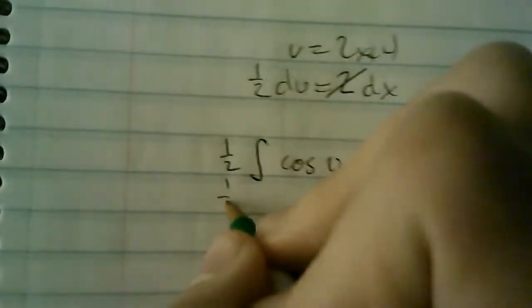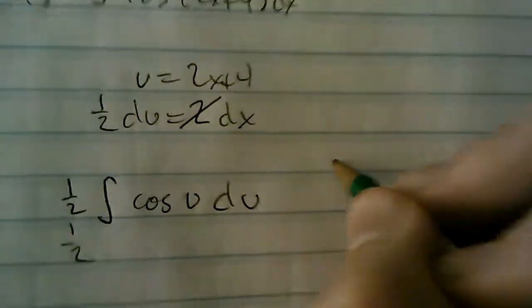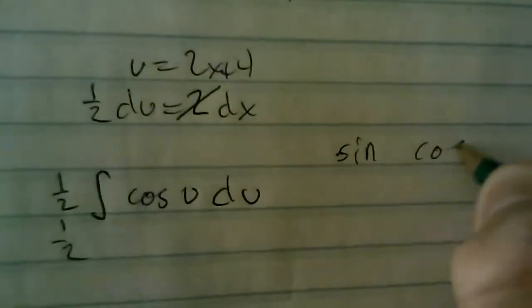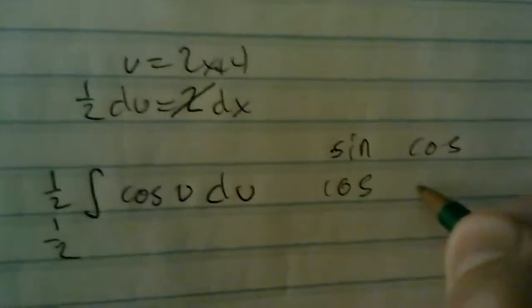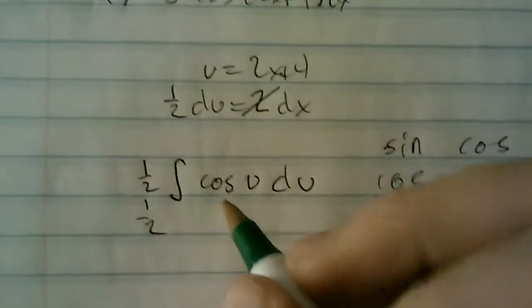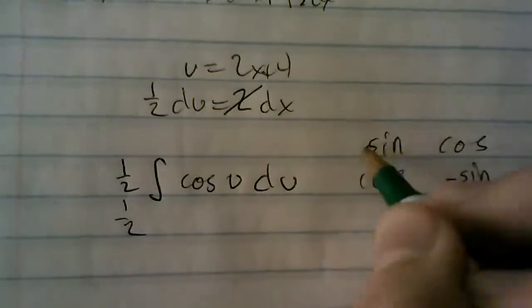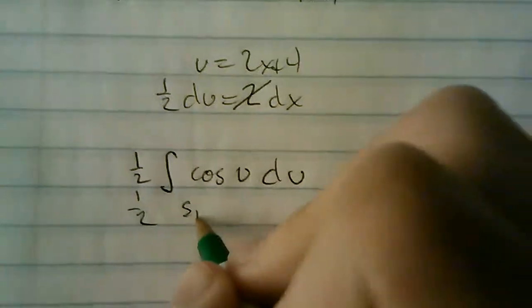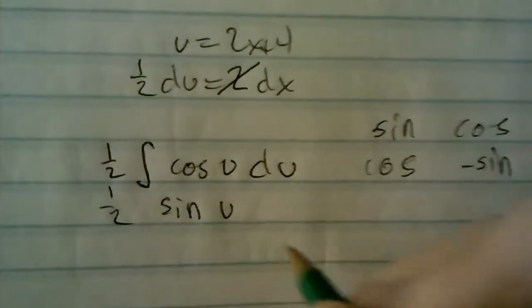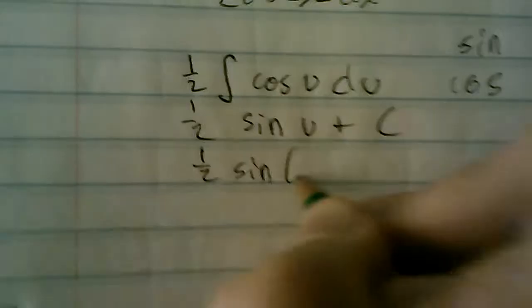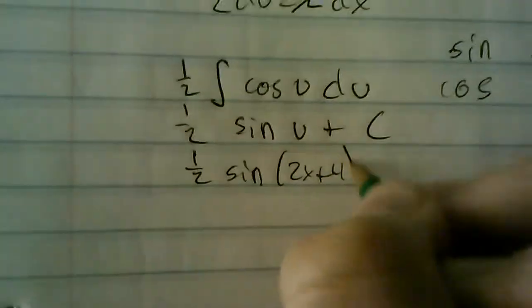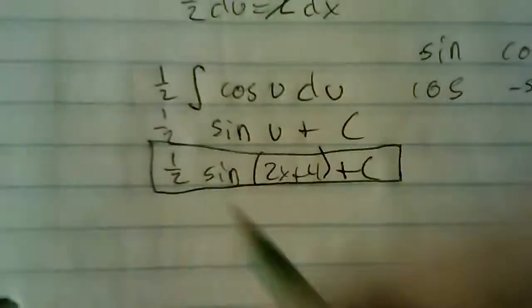Well, if you remember we have sine. Derivative of sine is cosine. Derivative of cosine is negative sine. So right now we have cosine, so the integral of cosine is sine. So it's one half sine u plus c. So we have one half sine of 2x+4 plus c. And that is your integral.